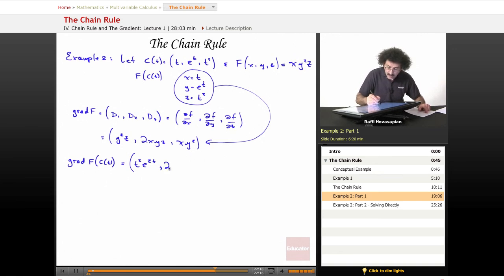2 times x, which is t, times y which is e^t, times z which is t². I end up with 2t³e^t. And xy² is t times e^(2t). That takes care of this one. That's the gradient of f evaluated at C(t).